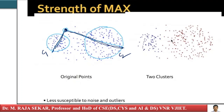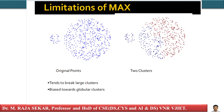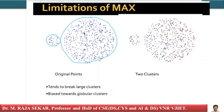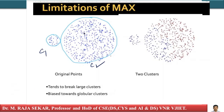Everything in the world has its limitations. The limitation of max: consider two clusters — one small cluster and one large cluster. If I already have cluster c1 and cluster c2, and I consider one specific point, let's look at it from the perspective of that point.